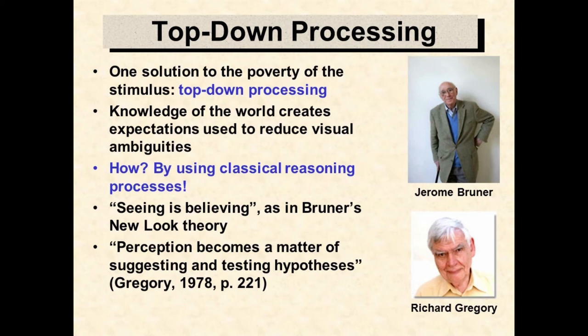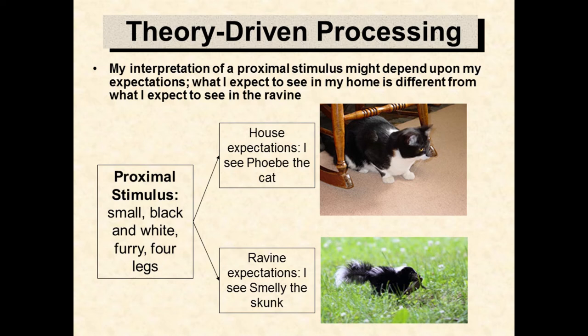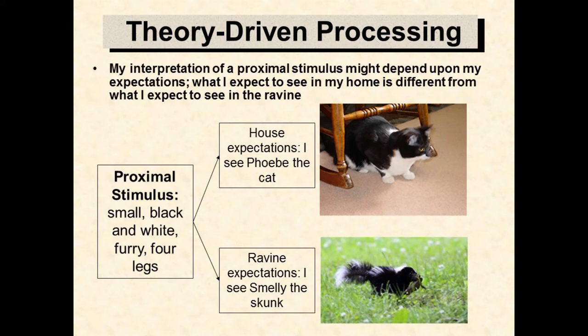This classical view of perception is called top-down processing, or theory-driven processing. For example, imagine a proximal stimulus that delivers features like small, black and white, four legs, furry, two eyes, and nose. I use knowledge about where I am to create a sense of what I am seeing. If I am in my house, I expect to see my cat Phoebe, and this is my interpretation of the proximal stimulus. If I am in the ravine, I would not expect to see my indoor cat, but would not be surprised to see a skunk. A change in expectations results in a changed interpretation of the same proximal stimulus.